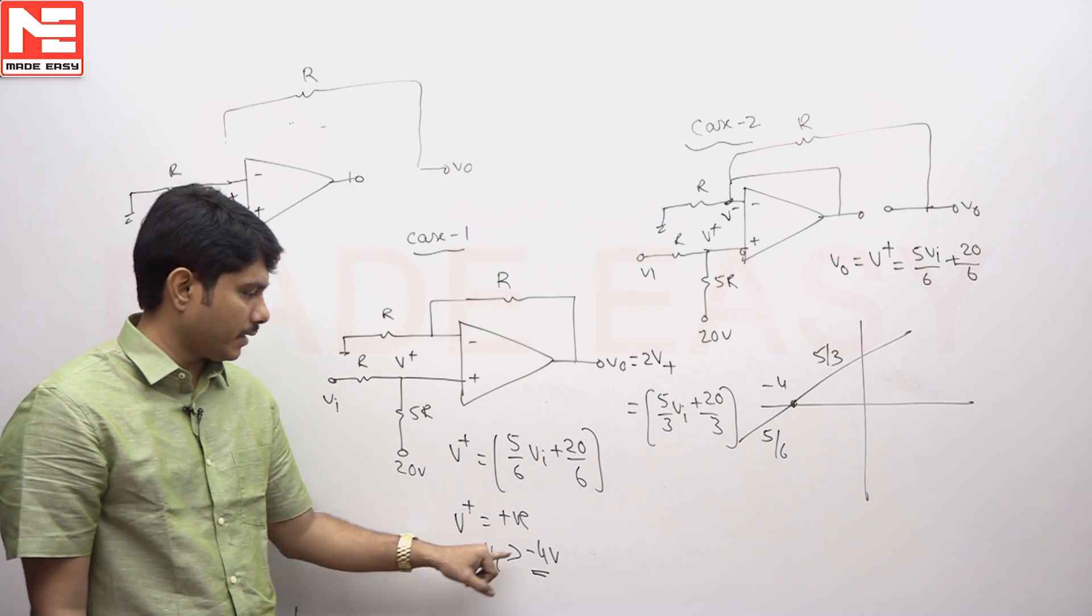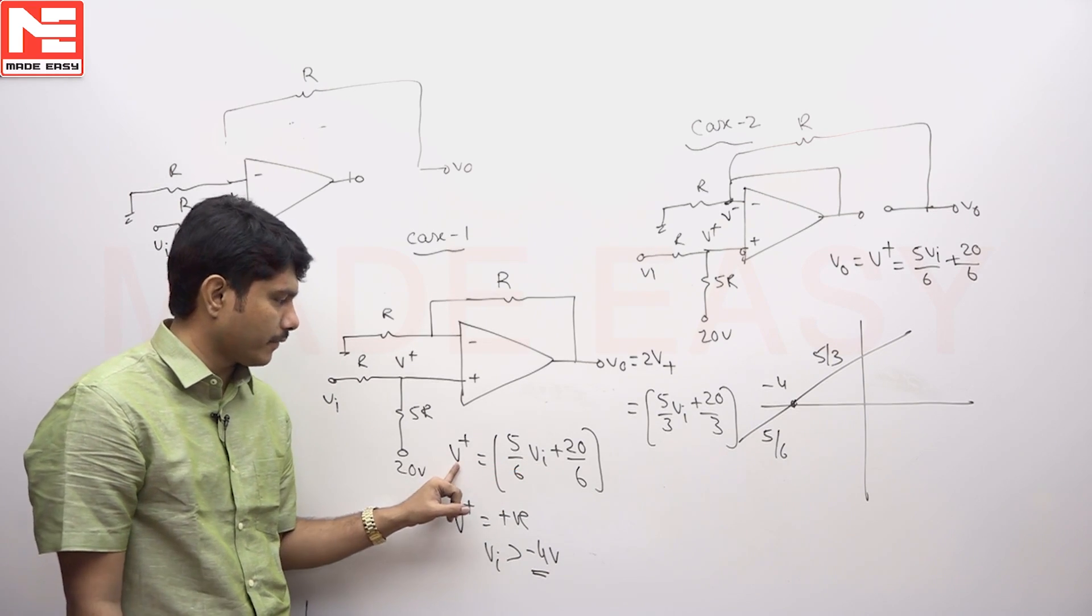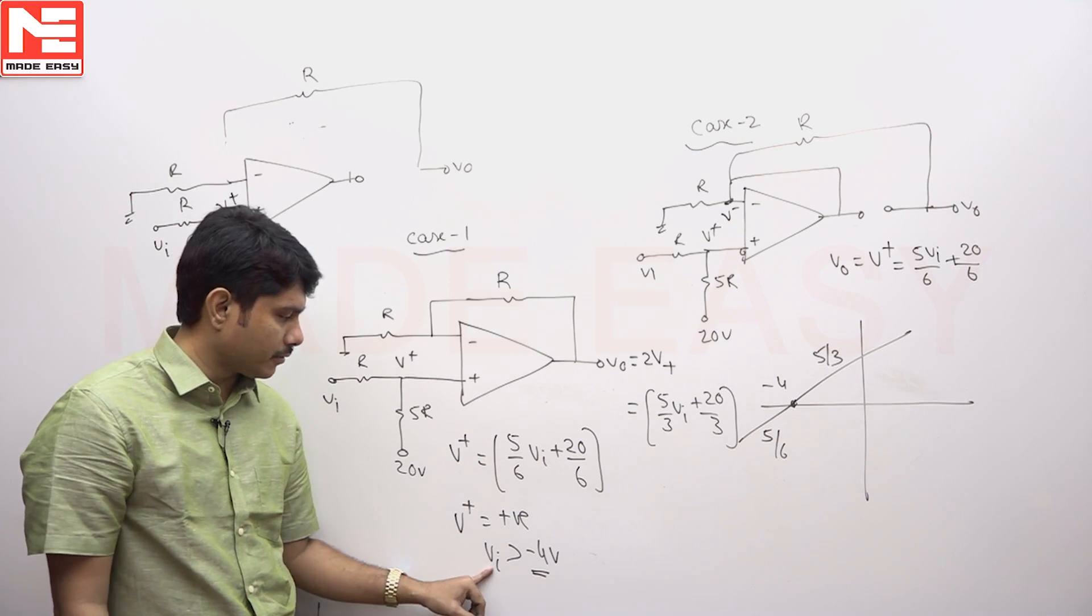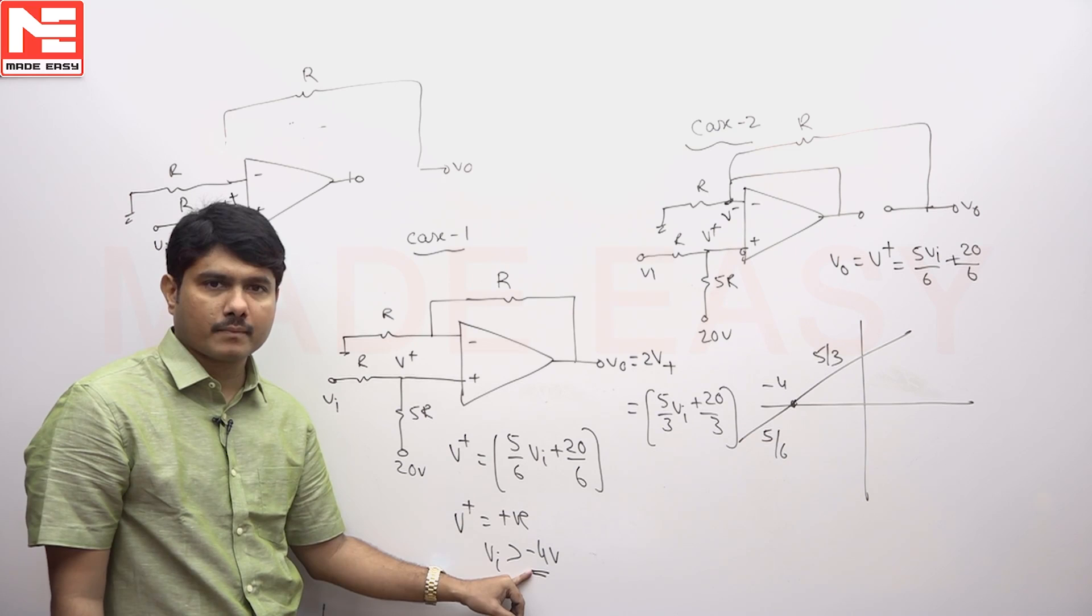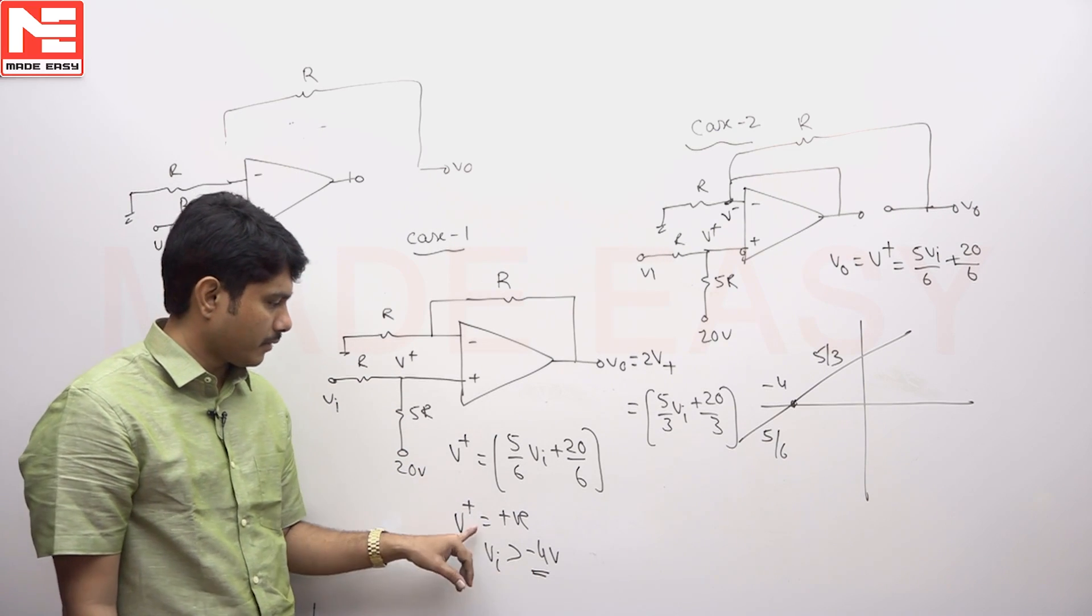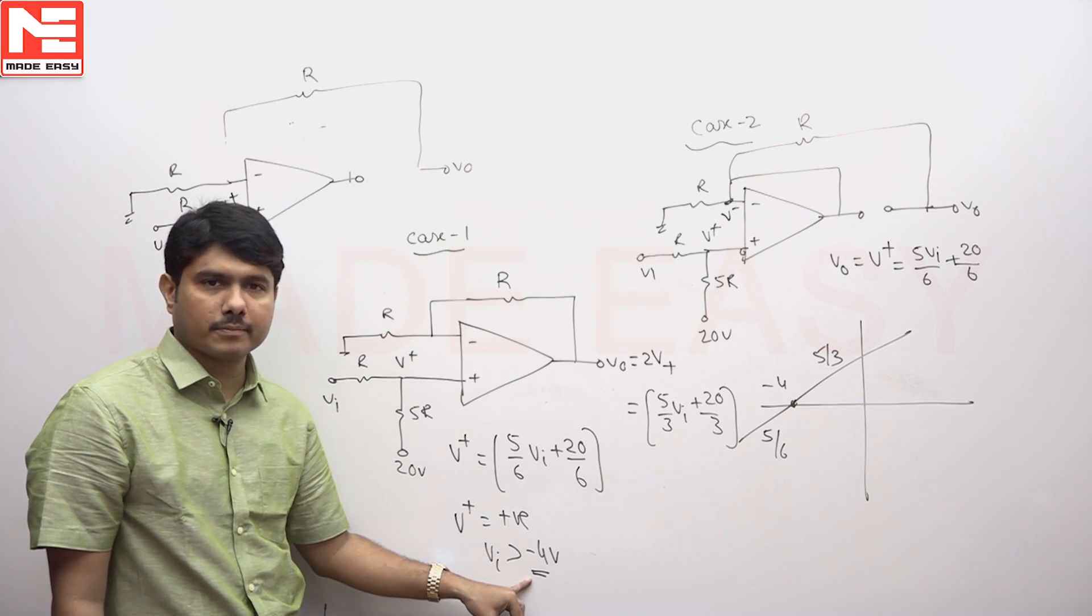I have substituted minus 4 in this equation so that V plus is coming zero. That means for V plus to be positive, VI should cross minus 4 volts. This is the condition from the equation, from the equation he designed.